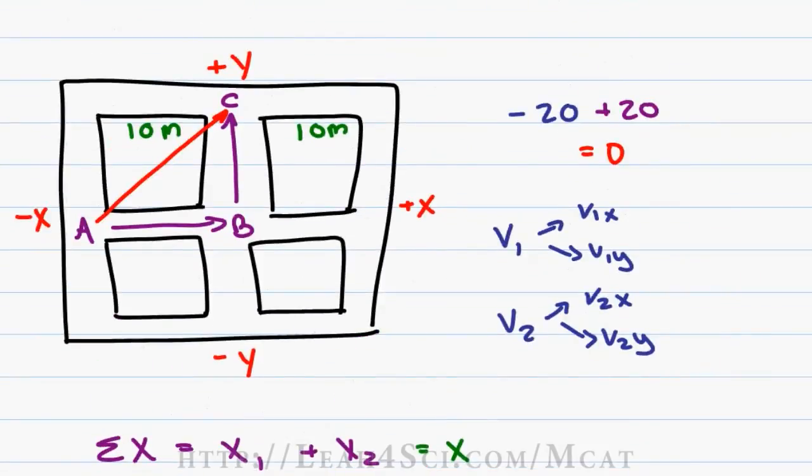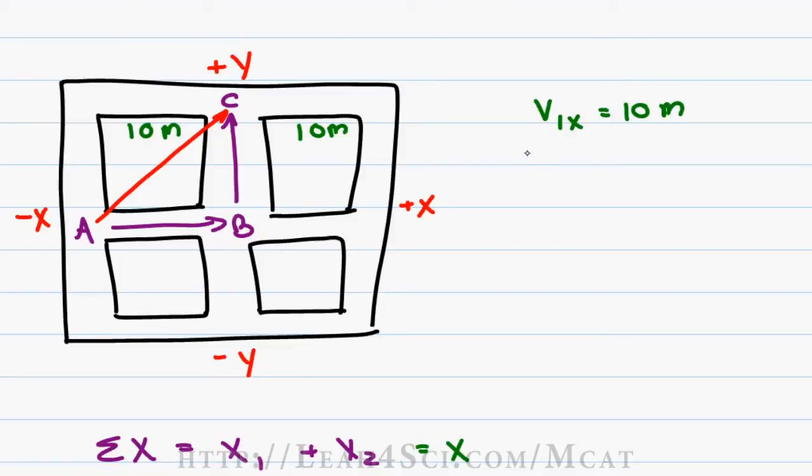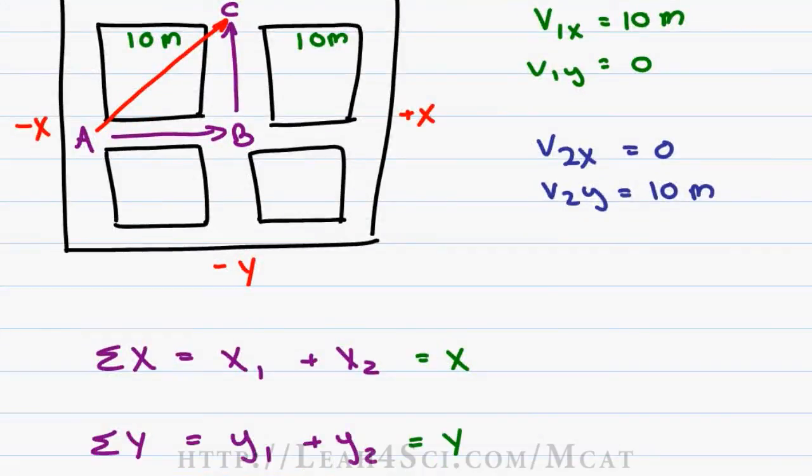Going back to our example, this is relatively simple because the first vector V1x is equal to 10 meters. V1y is equal to zero because we've only traveled in the x direction. The second vector, we have V2x is equal to zero because we traveled north so we have nothing in the x direction. But V2y is equal to 10 meters because we traveled 10 meters north. Now be very careful, I'm using V to represent vector, not velocity. This is just our walking vector. Adding our vectors, x1 equals 10, x2 is zero, so x is really just 10 meters. y1 equals zero, y2 is 10, once again we have 10 meters.